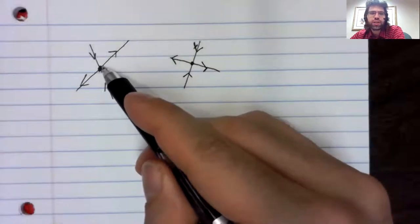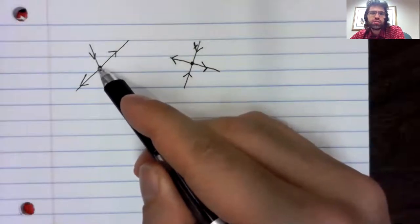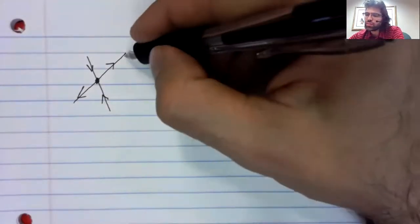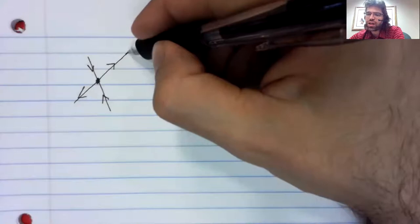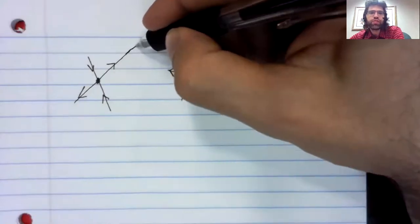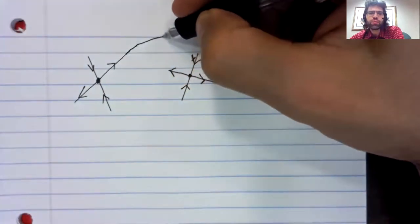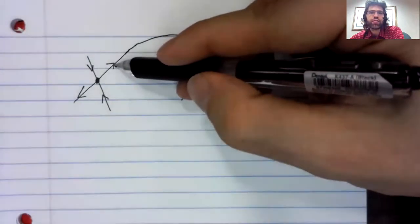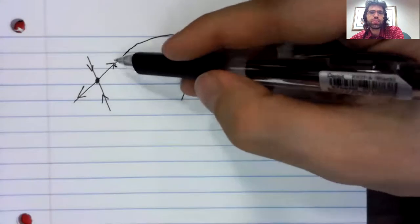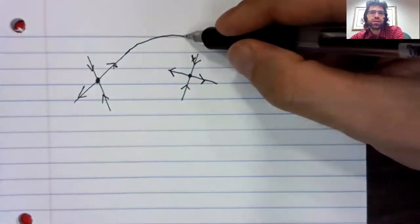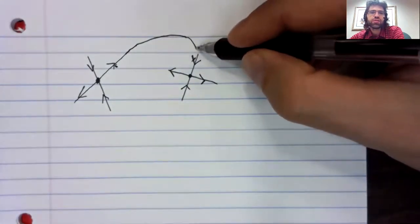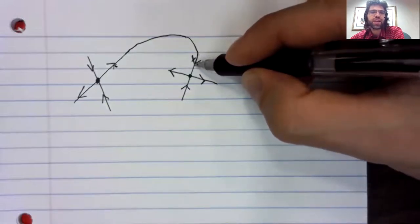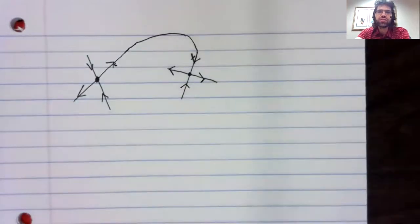And let's say we are on the unstable manifold of this fixed point. We let time flow forward. It's possible that the unstable manifold of this fixed point is part of the stable manifold of the second fixed point.